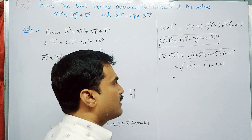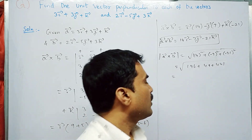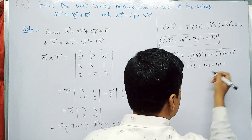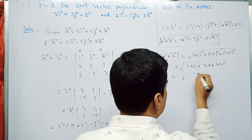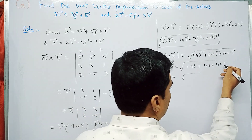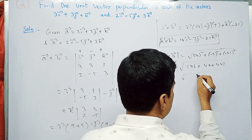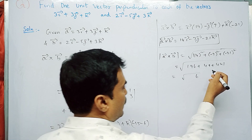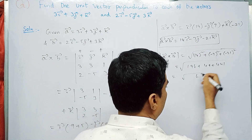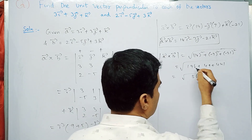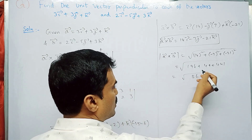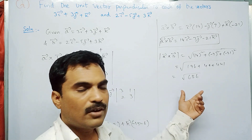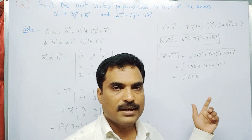Adding: 196 + 49 + 441 = 686. So the magnitude is √686.